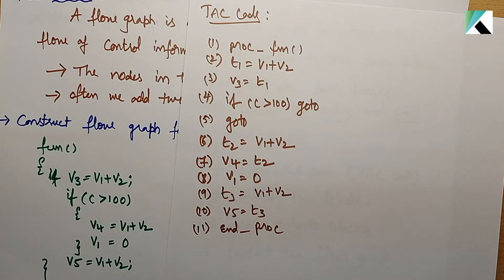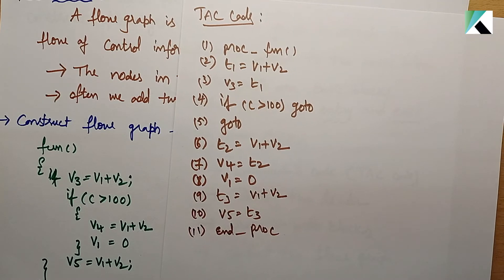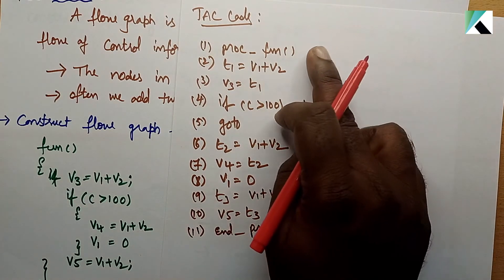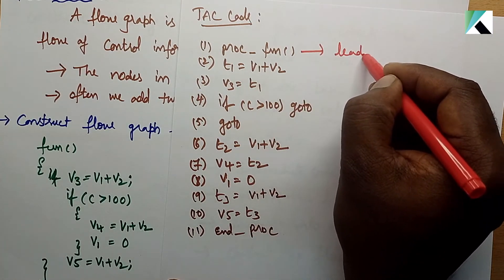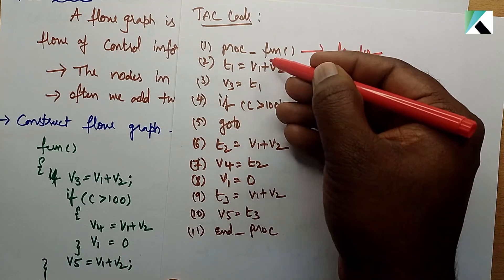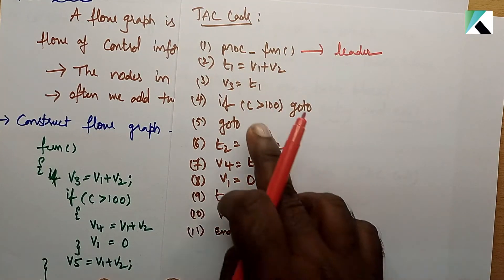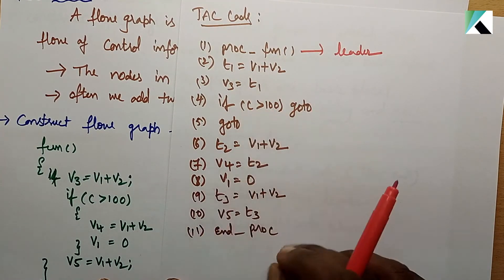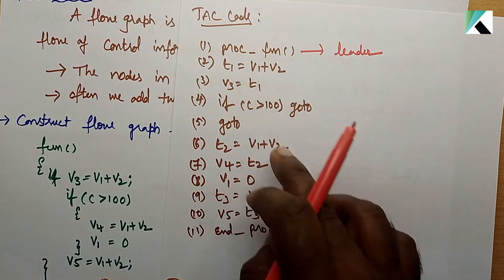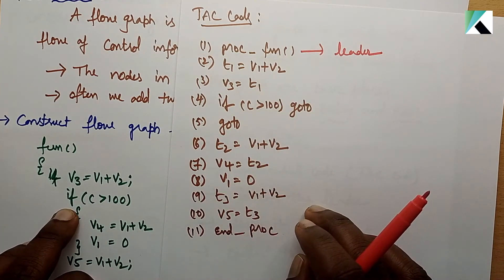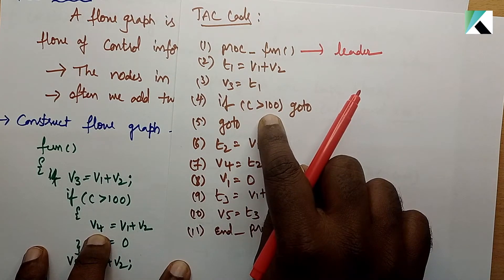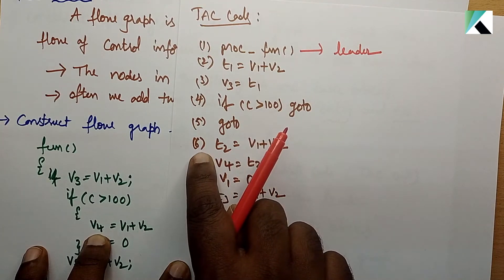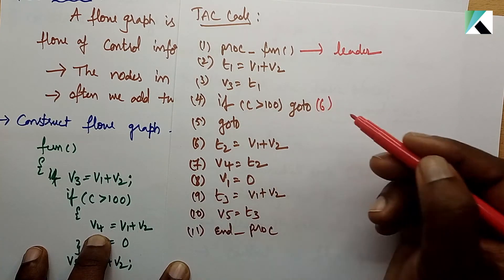Next task: find out the leaders. The first statement is always a leader. Next, the 10th statement — if it is a conditional or unconditional jump target, the next statement after that is a leader. For example, if c greater than 100 then go to 6 — so statement 6 is a leader.